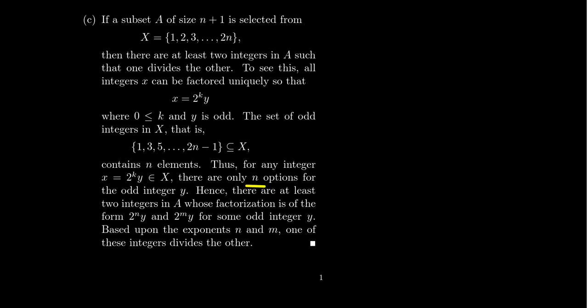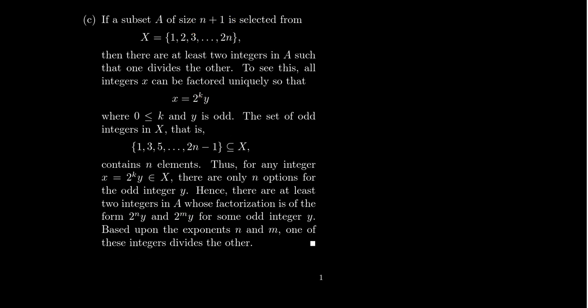There are only N options for these odd integers Y, and so these represent the N pigeonholes. We're going to select N plus 1 pigeons randomly — that's how we use the pigeonhole principle here. Since we chose N plus 1 integers and we only have N options for Y, we must have selected at least two integers with the exact same Y factor. There are two pigeons in the same hole. Those two integers would look like 2 to the N times Y and 2 to the M times Y, where Y is the exact same odd integer.